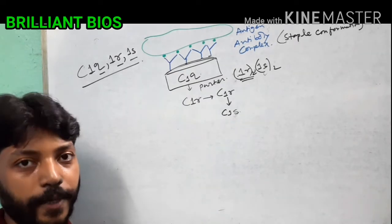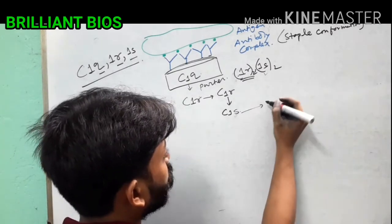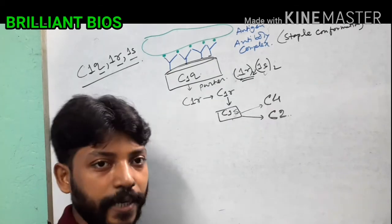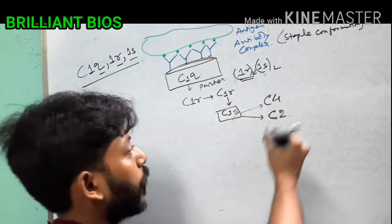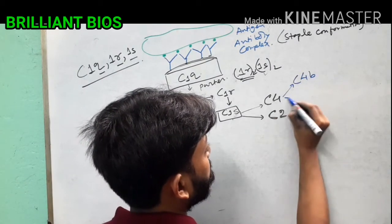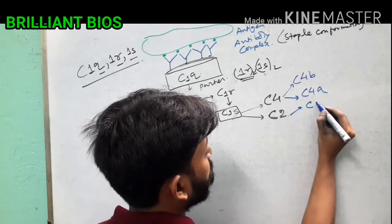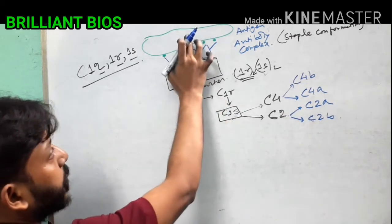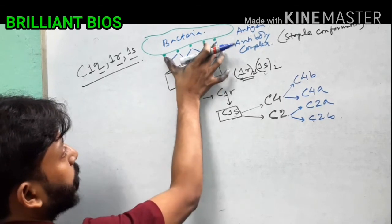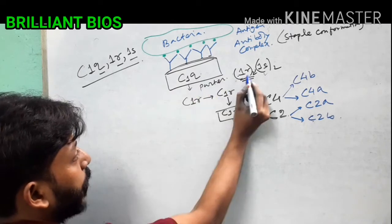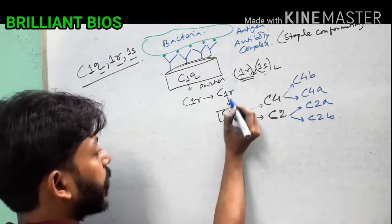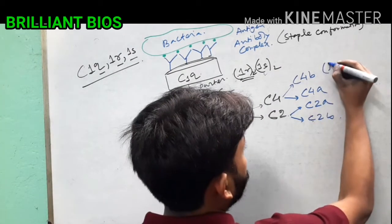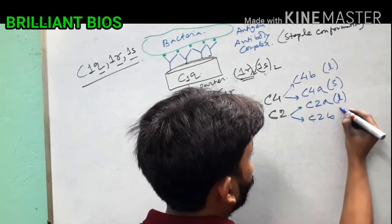C1S is an enzyme that can cleave two complement proteins: C4 and C2. After cleavage, C4 produces two fragments — C4b (the larger fragment) and C4a (the smaller fragment). C2 produces C2a (the larger fragment, this is the exception) and C2b (the smaller fragment). Remember: C4b is the larger fragment following the normal rule, but C2a is the larger fragment, which is the exception in the complement pathway.